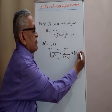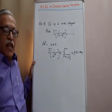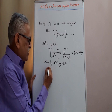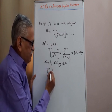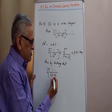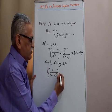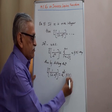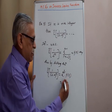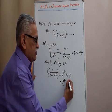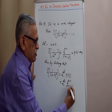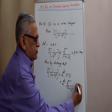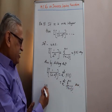Then by the shifting theorem, the inverse Laplace of 1 upon s minus a whole raised to n is e raised to at into t raised to n minus 1 upon n minus 1 factorial. Therefore, the answer is option A.